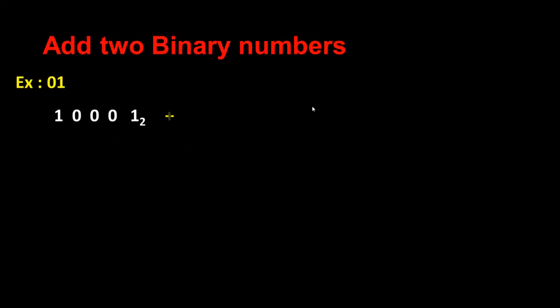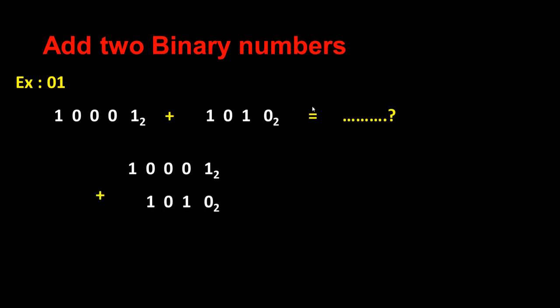I'm going to add two binary numbers: 1 0 0 0 1 plus 1 0 1 0. Now I'm doing like this, I write the question like this. As you know, 1 plus 0 is 1, and then again 1 plus 0 is again 1, 0 plus 0 is 0, 1 plus 0 is 1.